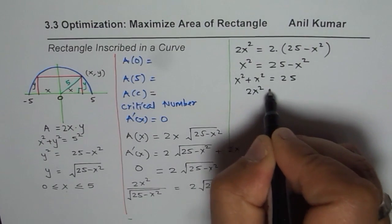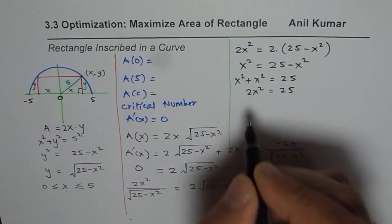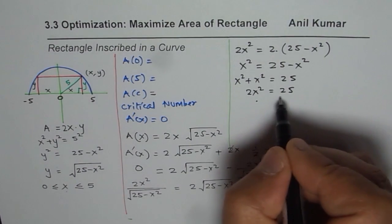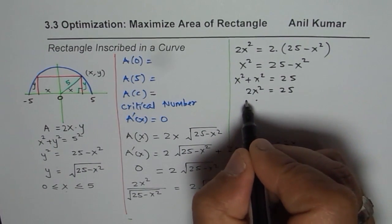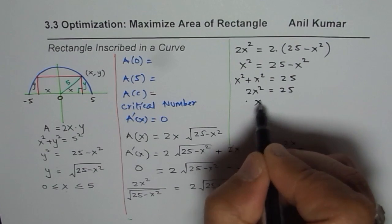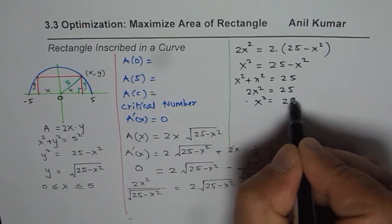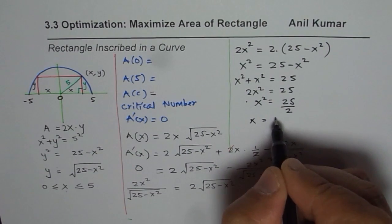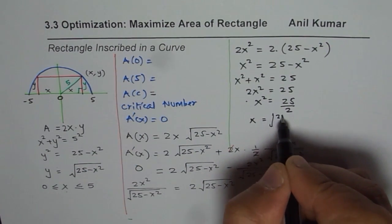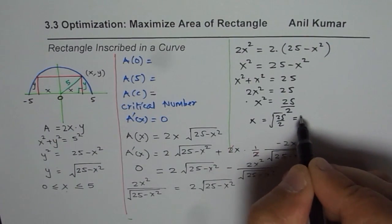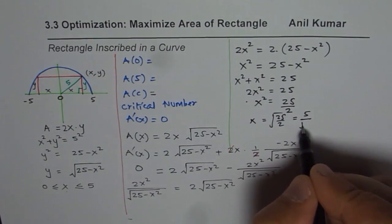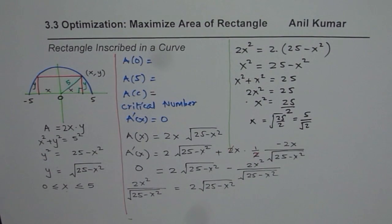Bringing it together: x² + x² = 25, so 2x² = 25. Dividing by 2 and taking the square root, x² = 25/2, so x = 5/√2. That is the value of x which will give the maximum area.